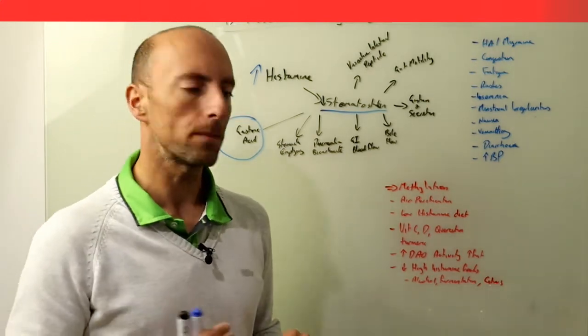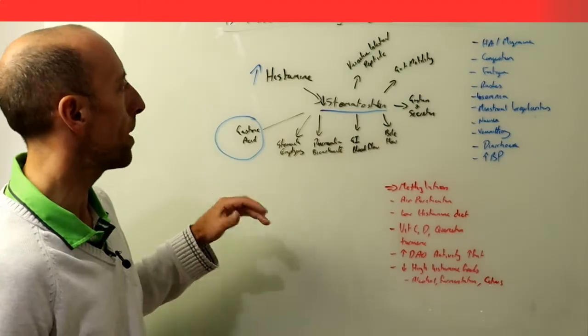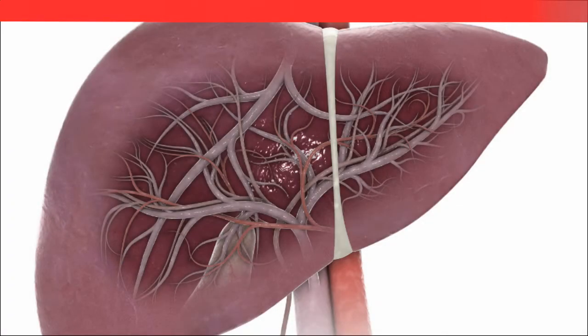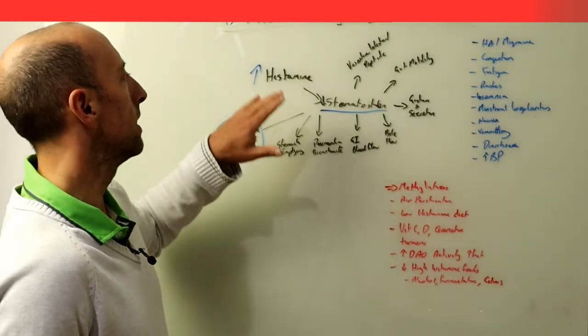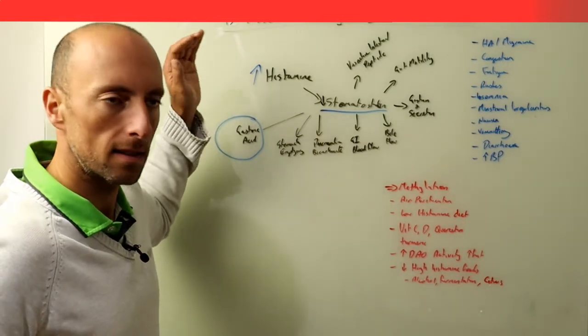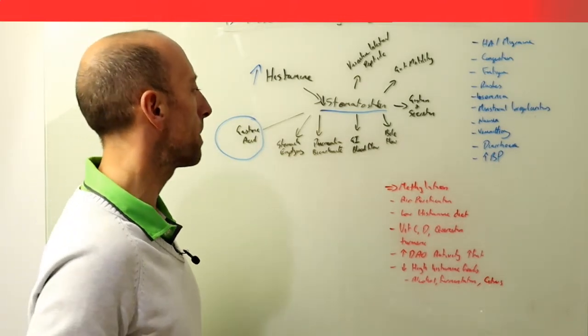Some of the things that you can look at: the first thing is that there's a pathway within the liver called methylation that we've spoken about in terms of brain health and neurotransmitter production. Methylation is important again for the switching off of histamine, the decoding and elimination of it.